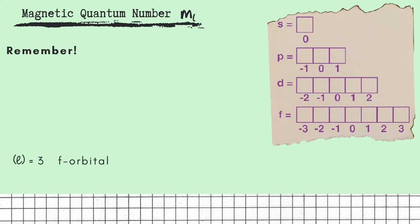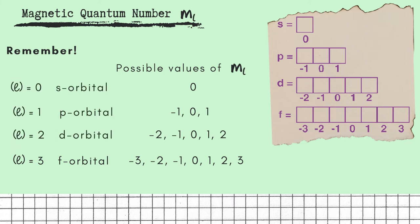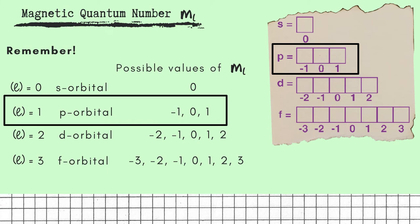The allowed values of M sub L are negative L through 0 to positive L. For example, if we have L equals 3, the possible values of M sub L are negative 3, negative 2, negative 1, 0, 1, 2, and 3. This is why, for example, if we have P orbital, there are 3 P orbital sub-levels corresponding to M sub L values of negative 1, 0, and positive 1.